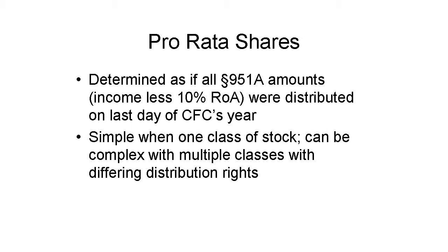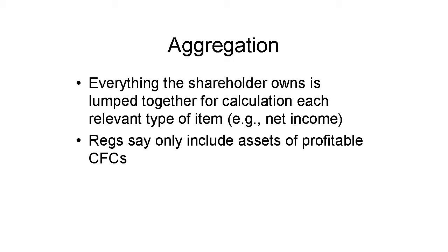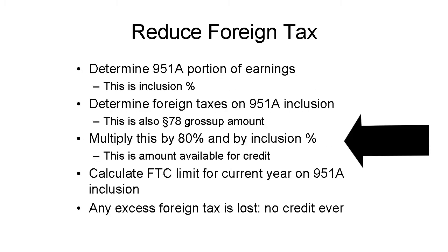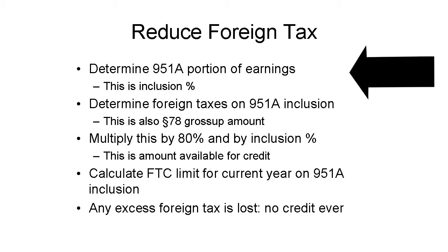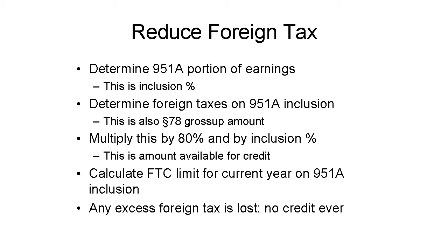These taxes are then allocated among the shareholders the same way the income is for the 951(A) net inclusion. Then, once each CFC's taxes are allocated, each shareholder calculates his aggregate of such taxes. Then multiply this amount of tax by 80% and his inclusion percentage. The result is potentially creditable foreign income tax. The excess of the aggregate tax over this amount is lost forever. The inclusion percentage is the ratio of the net inclusion after reduction for the 10% amount over the aggregate of his share of positive CFC net incomes.